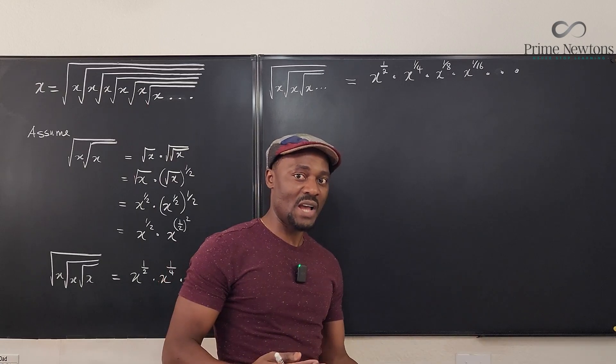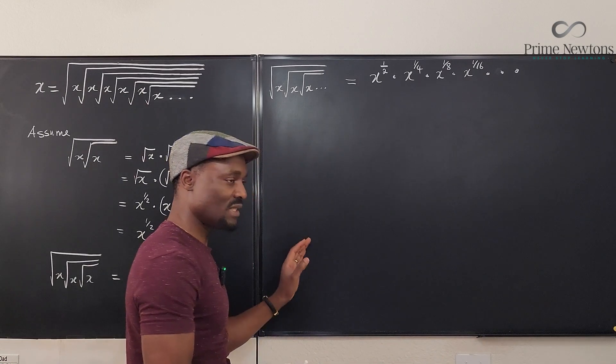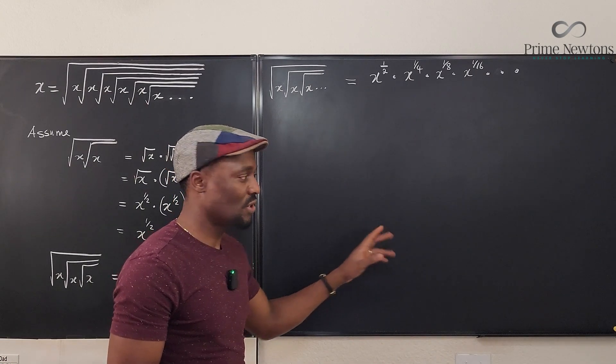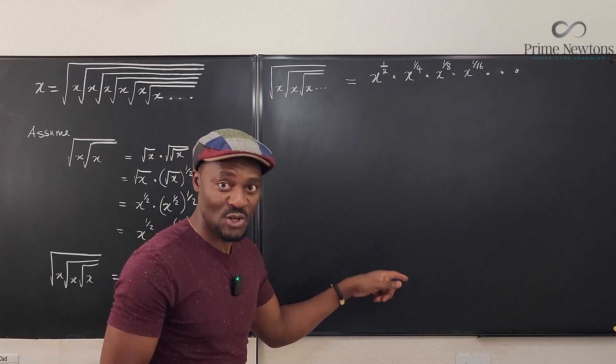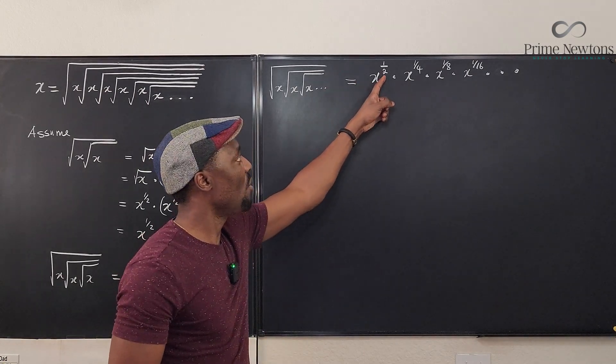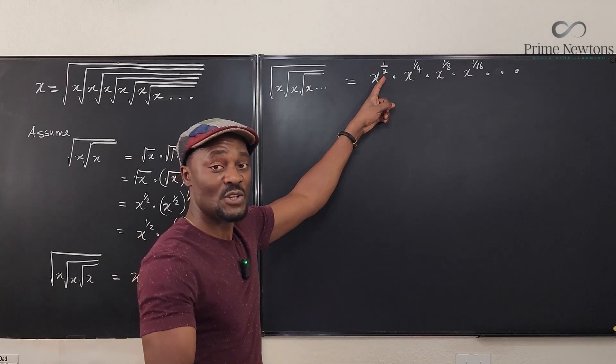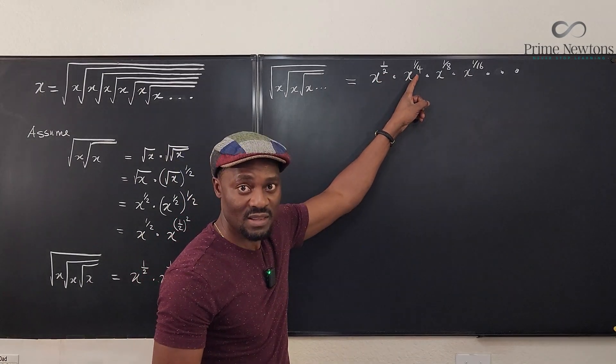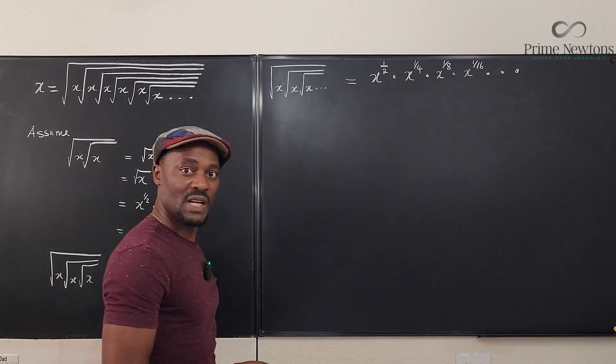From your high school algebra, you know that if you raise something to a power, you just multiply the previous power by the new power. That's what's happening. Multiply the previous power by the new power, which is one half, you get this. Now, how do we clean this up?